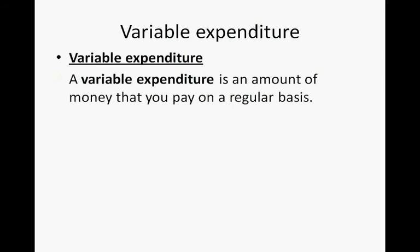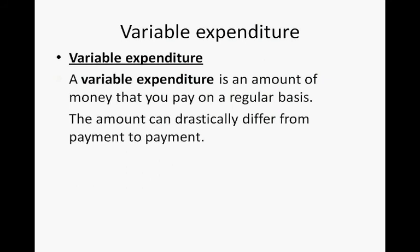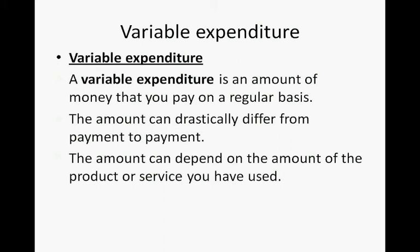Variable expenditure. A variable expenditure is an amount of money that you pay on a regular basis, and the amount can drastically differ from payment to payment. So this is an amount that you pay often — once a year, once a month, once a week — but it differs every single time you make the payment. The amount can depend on the amount of product or service you have used. For instance, the more electricity that you use, the more you will pay towards electricity. Or the more that you use your cell phone, the more you have to pay in additional cell phone charges on top of your contract.